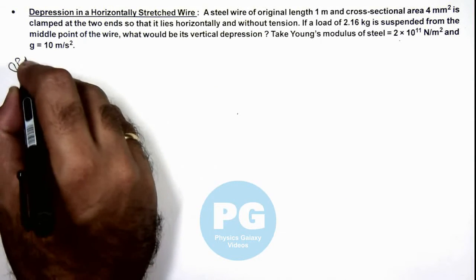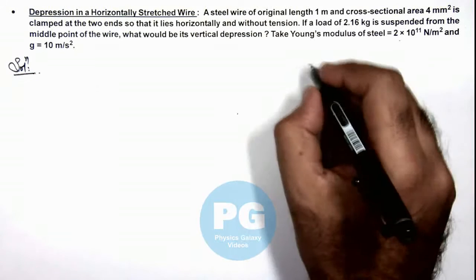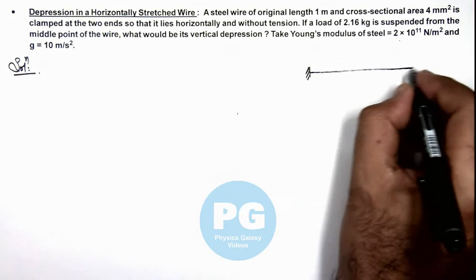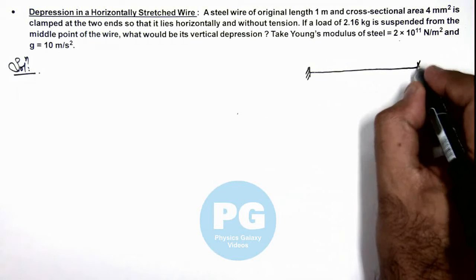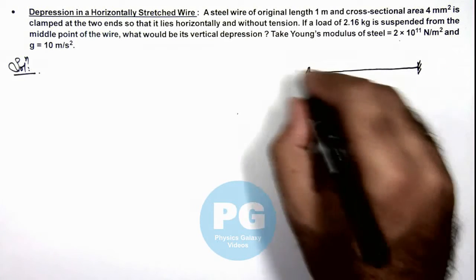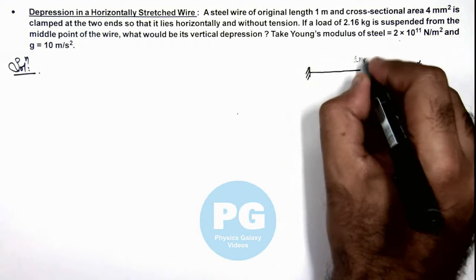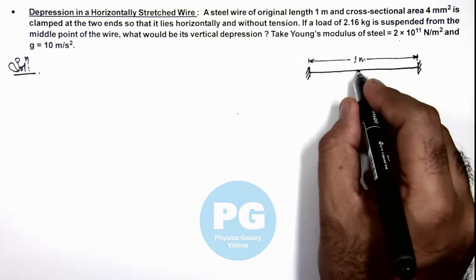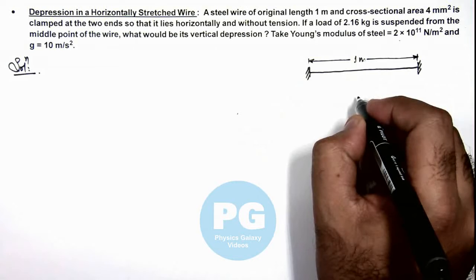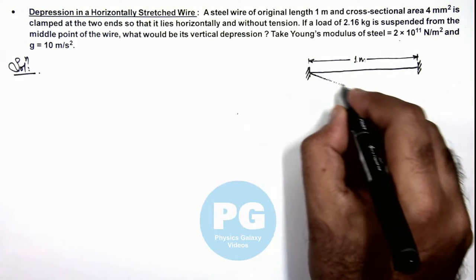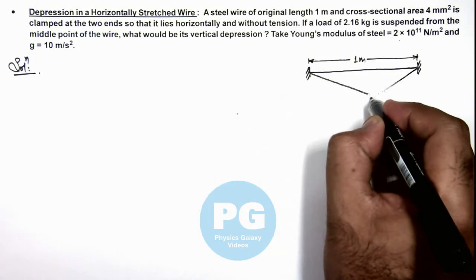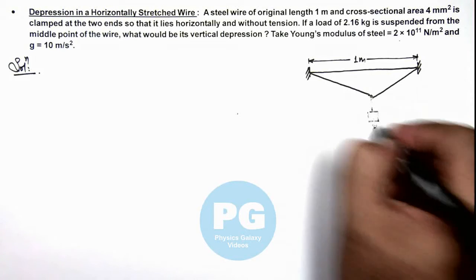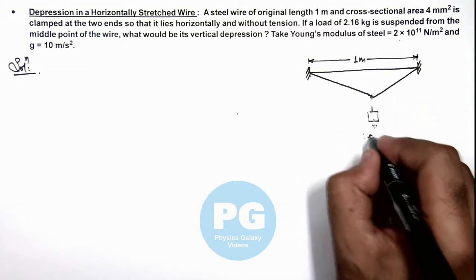Here, in solution first, we can draw the figure. Between two ends, a wire is stretched and the wire is of length 1 meter, which is given to us. And at the middle when a load is hanged, then the wire will get depressed at the middle point. And say the load is of weight 2.16g.